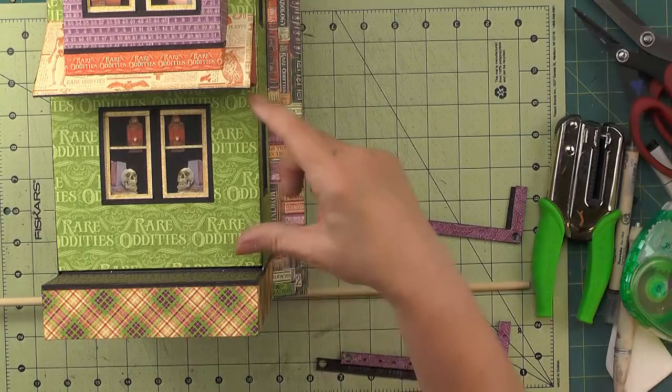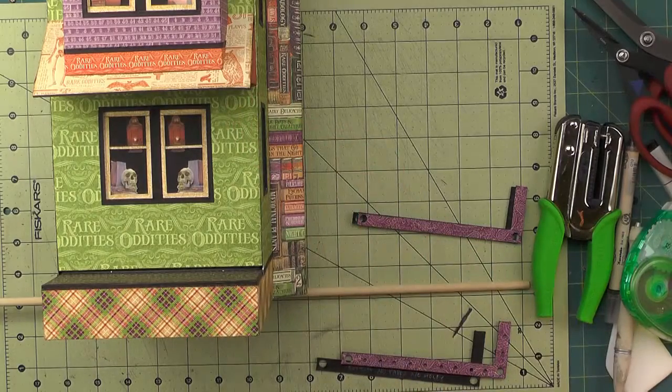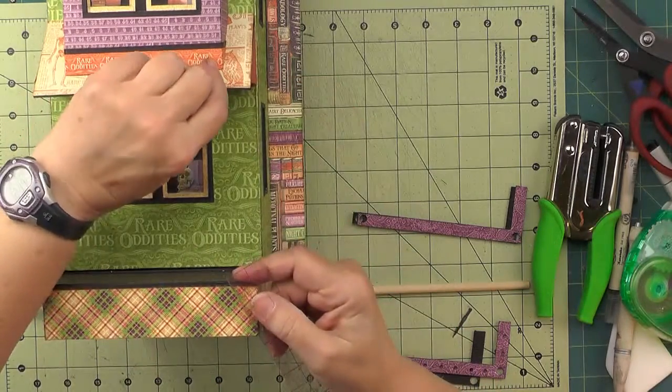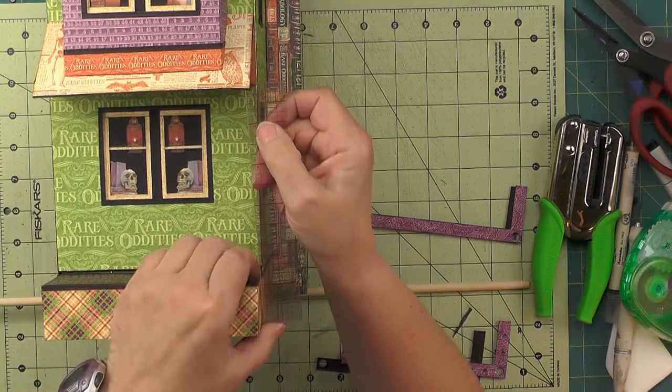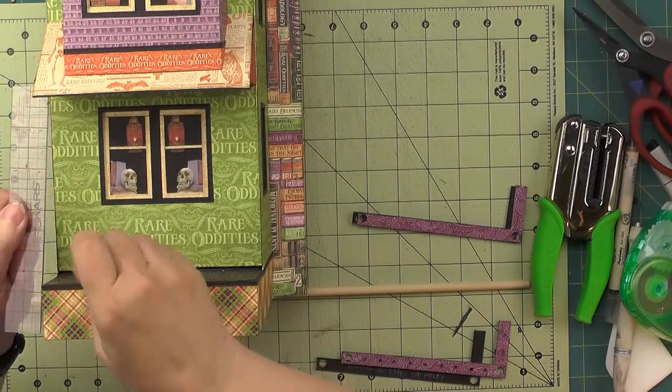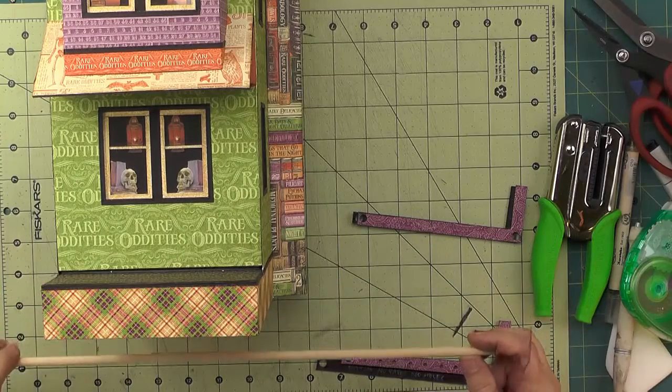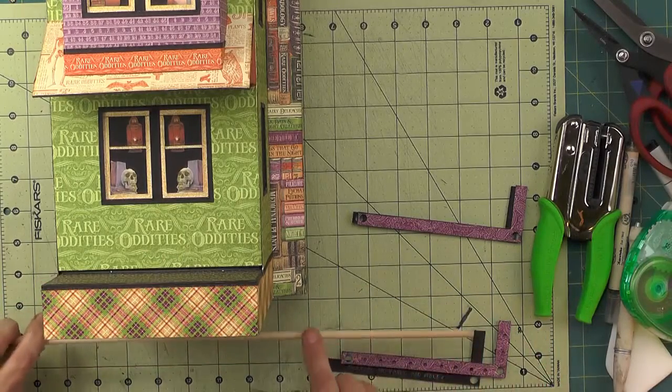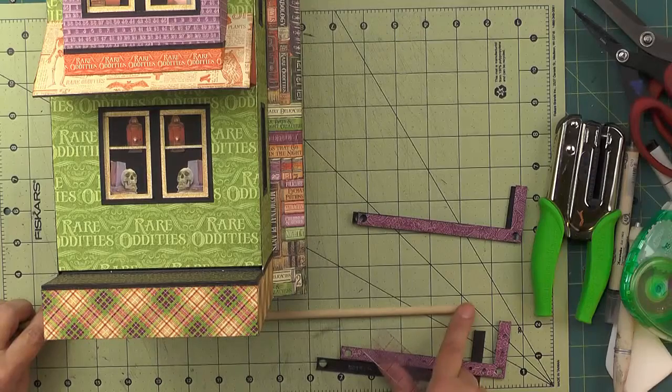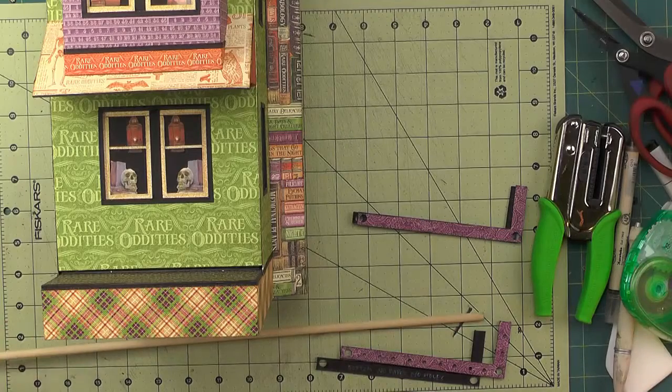Now we'll want to measure for our dowels. We need two dowels, one on each side here. You want them to be a snug fit, but not pushed up, but snug. Take a careful measurement. One side may be a little bit different from the other, so measure both sides. I have some quarter-inch dowel here that I will cut to length, and I'm going to use my Copic marker to color the pieces. You could paint them.